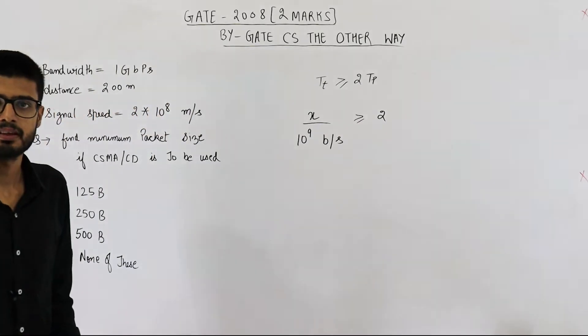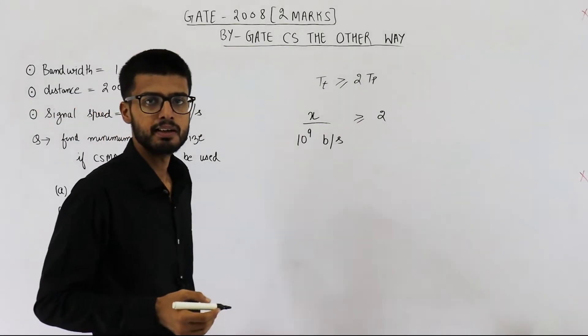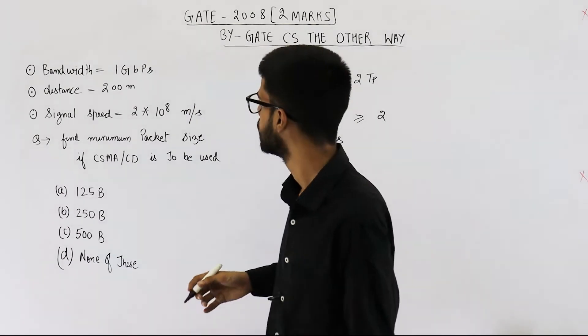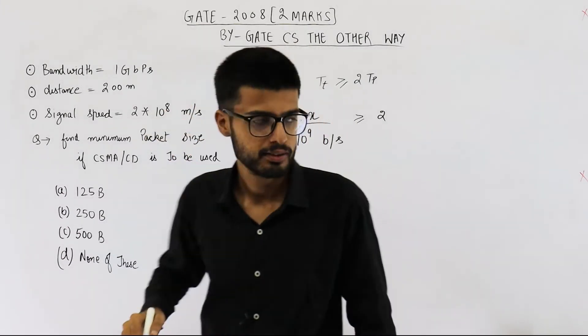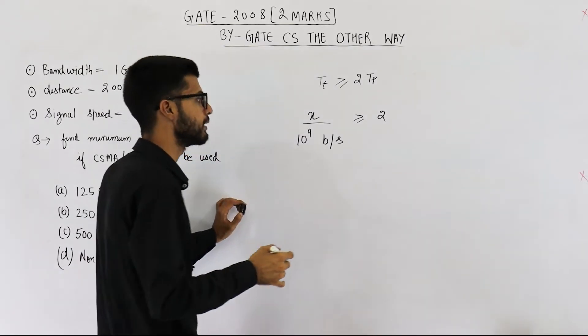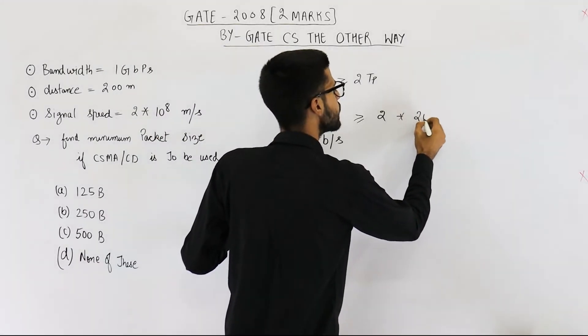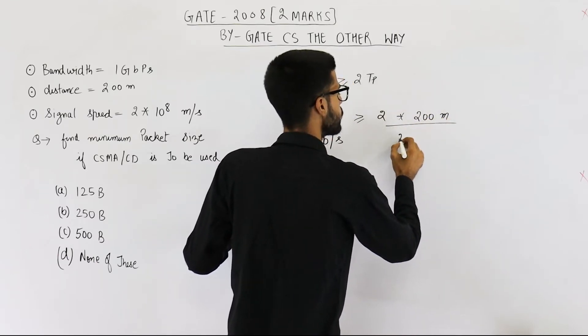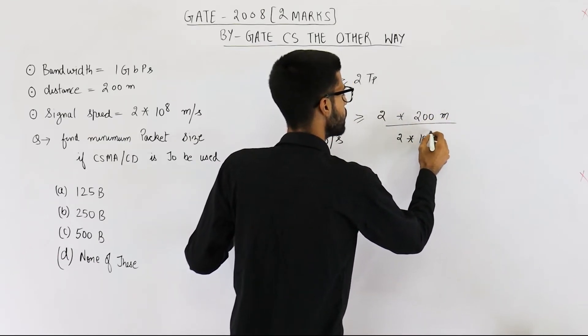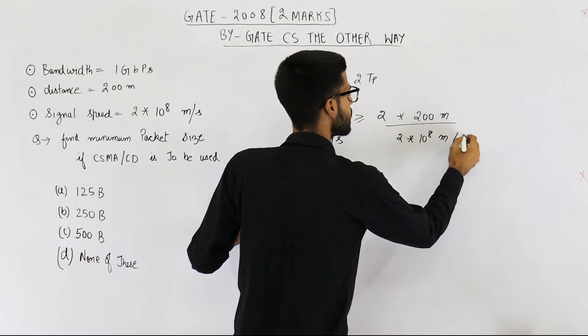Propagation delay is defined as the distance between two nodes divided by signal speed. So distance is 200 meter and signal speed is given as 2 into 10 raised to the power 8 meter per second. So into 200 meter divided by 2 into 10 raised to the power 8 meter per second.